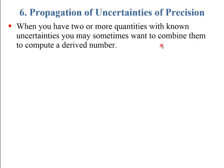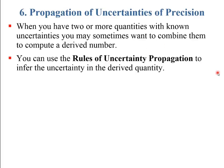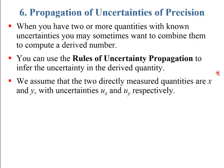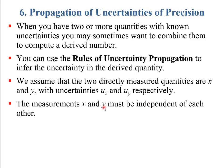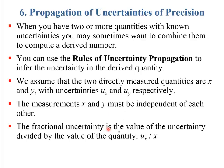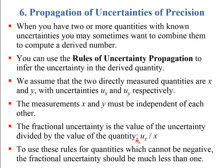Propagation of uncertainties: when you have two or more quantities with known uncertainties, you might want to combine them to compute a derived number. We use uncertainty propagation rules to infer the uncertainty in the derived quantity. We assume we have two numbers x and y with uncertainties u sub x and u sub y respectively, which are independent of each other. We'll also use fractional uncertainties u sub x over x and u sub y over y. Note that if x is a positive quantity like mass, the uncertainty should be much less than the value itself.